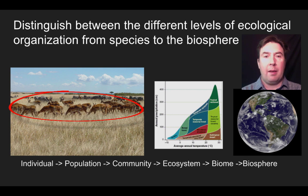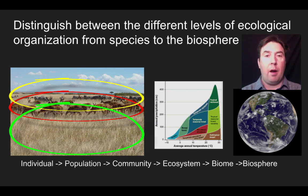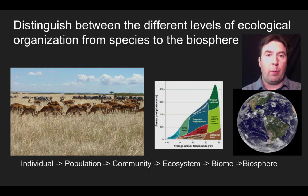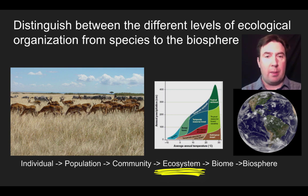If we look at that population of antelope along with the population of zebras in the back, the population of grass, and other populations in this given area, that would be our community — the collection of populations in a given area. Then if we add the abiotic factors — the non-living factors such as soil, air, water, temperature, and other factors — we get the ecosystem description. In this particular case, the ecosystem is a grassland.